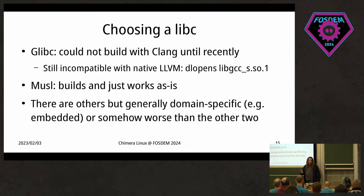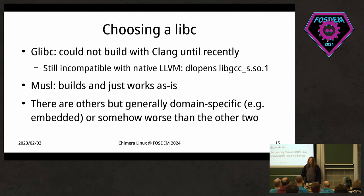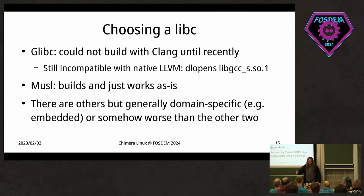glibc could not build with Clang until recently — now it does, but it's still incompatible with native LLVM-style ABI because it dynamically opens libgccs. Musl just works and always worked.